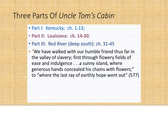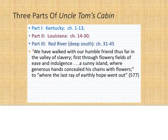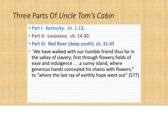The three parts of Uncle Tom's Cabin are: Part 1, Kentucky, chapters 1 through 13; Part 2, Louisiana, chapters 14 through 30; and Part 3, the Red River Plantation, or the stand-in for the Deep South — we actually don't know what the state is.